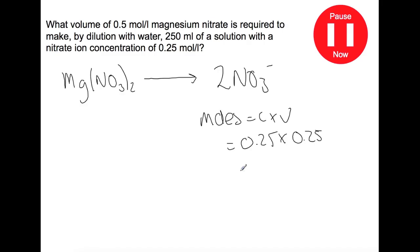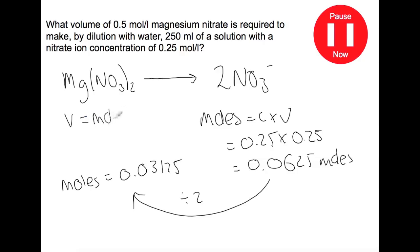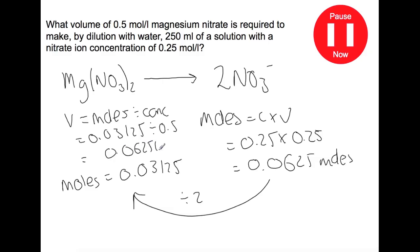Remember to divide any millilitre volumes by a thousand before moving forward with the calculation. Like last time, we look at the relationship between moles of nitrate ions and moles of magnesium nitrate — we divide our moles of nitrate ions by two to find how many moles of magnesium nitrate are required. Now we rearrange the formula to calculate volume. We would need 0.0625 litres, which is the same as 62.5 millilitres of solution.